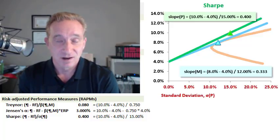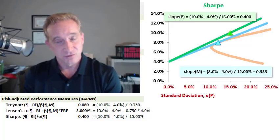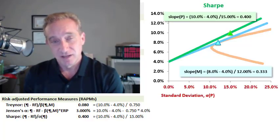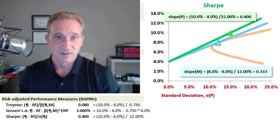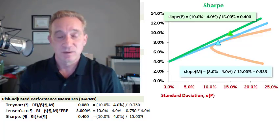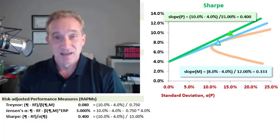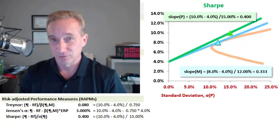I'd like to look at three common performance measures—the Traynor, Jensen's Alpha, and the Sharpe measure—but in the context of the security market line and the capital market line, so that we have a way to interpret them. You can also download my spreadsheet, which has dynamic labels if you want to take a closer look.